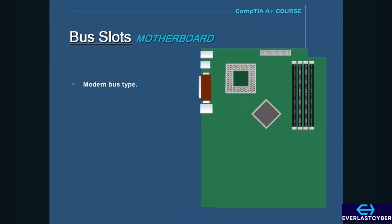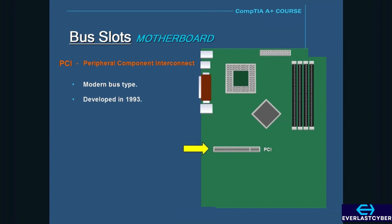A modern bus type today is called PCI, which stands for Peripheral Component Interconnect. PCI has been around since 1993 and was a standard bus slot for modern motherboards until PCI Express came out. PCI slots are much faster compared to ISA slots, with a data path of 32 or 64 bits, with speeds ranging from 133 to 533 megabytes per second. They are also about half the physical size and length of the ISA slot.